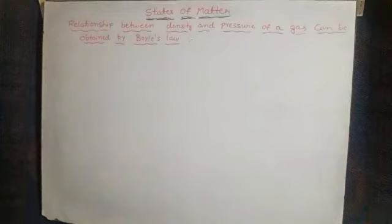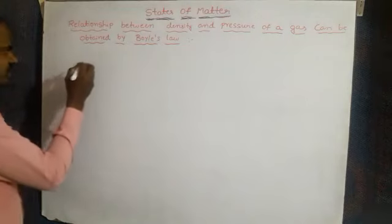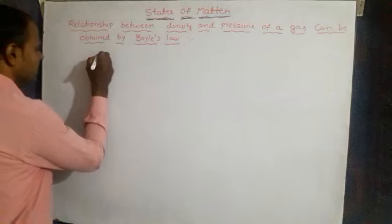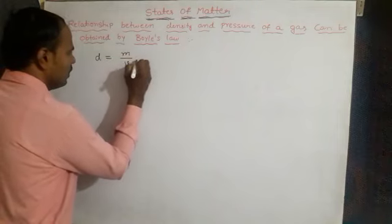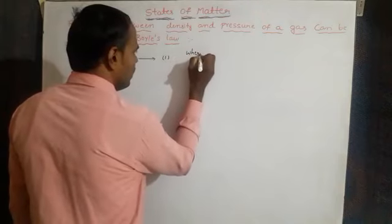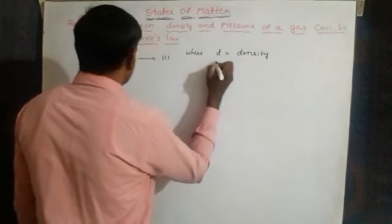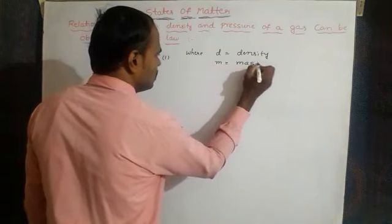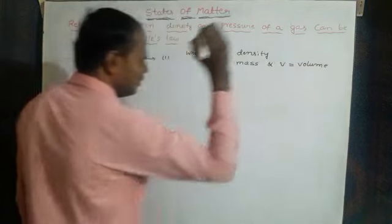Dear students, the next concept is the relationship between density and pressure of a gas, which can be obtained by Boyle's law. The definition of density is: density equals mass divided by volume, that is d = m/v. Here, d is density, m is mass, and v is volume.